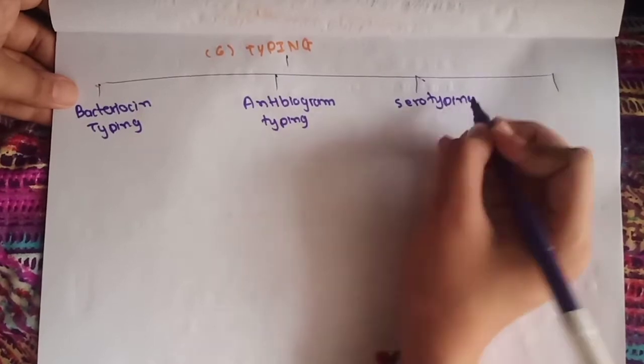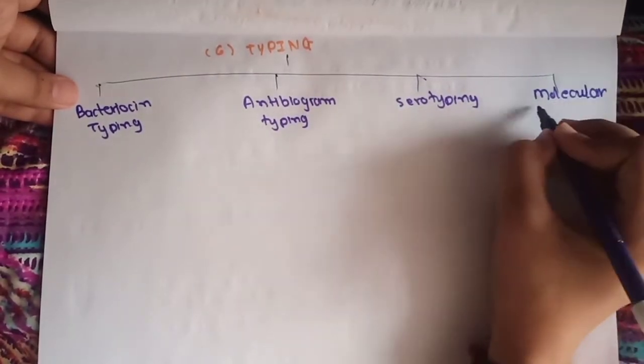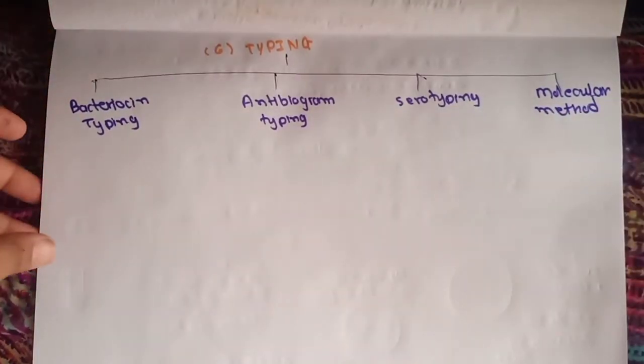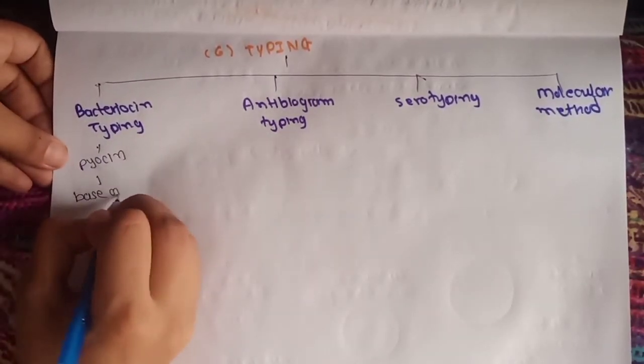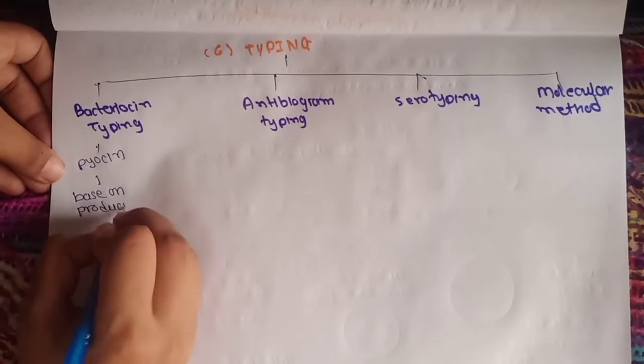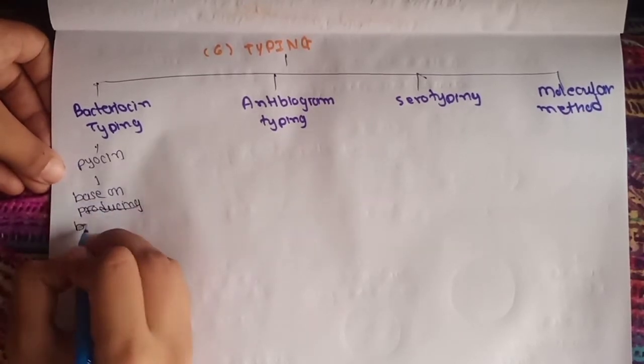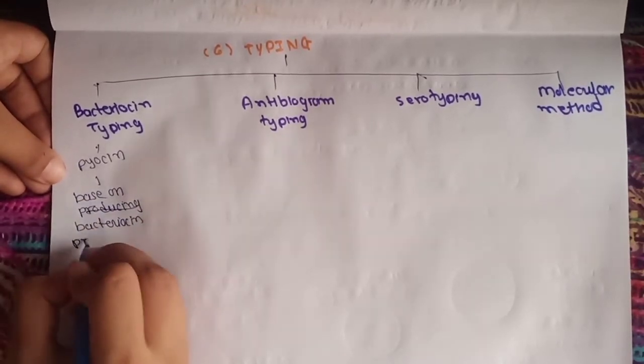Bacteriocin typing is also known as pyocin typing, and it is based on the bacteriocin producing ability that inhibits certain indicator bacterial strains.